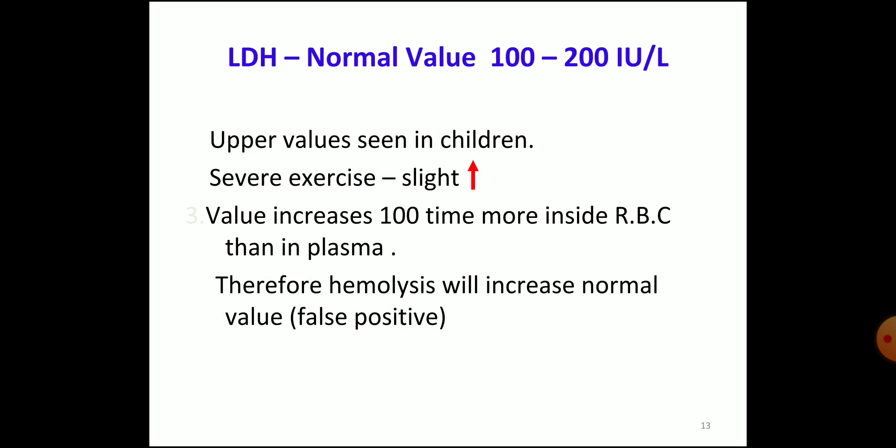Upper values are seen in children. Normal values are 100 to 200 international units. Severe exercise causes a slight increase. Values are 100 times higher inside RBC than in plasma; therefore hemolysis will increase the normal value and give a false positive result. So LDH is very plentiful in RBC, and hemolysis will affect the value.